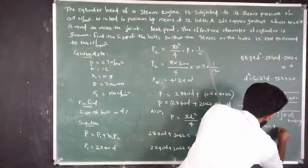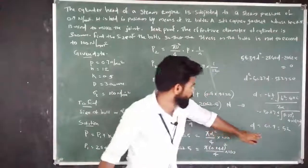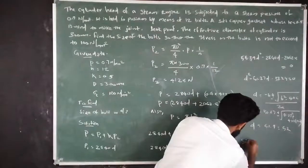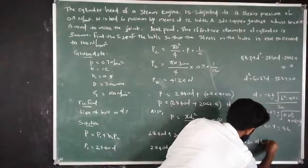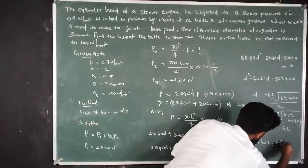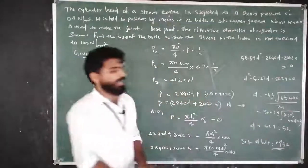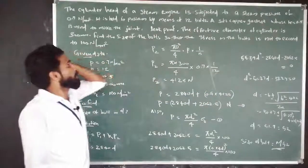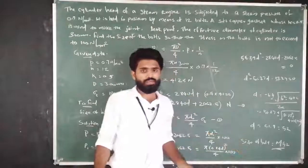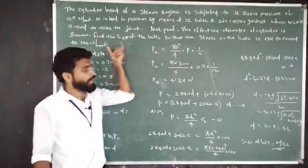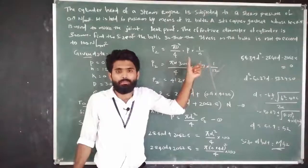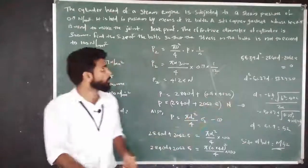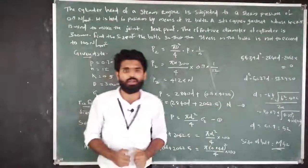The solution gives D ≈ 51.9 mm, which we round to 52 mm. Therefore, the nominal diameter D = 52 mm, and the size of the bolt is M52. This completes the procedure for finding the size of the bolt using the third condition — combined initial load and external load. Thank you, and we will continue in the next video.